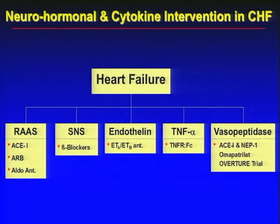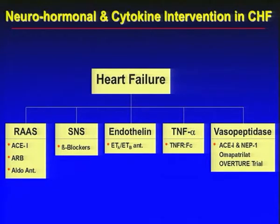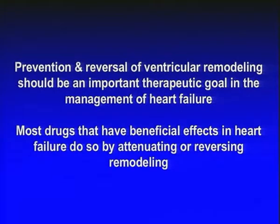It follows therefore that therapies were developed which would inhibit the adversely affecting neurohormones and promote those which had a beneficial effect. Thus came the evolution of ACE inhibitors, angiotensin receptor antagonists, aldosterone antagonists, and blockers of the sympathetic nervous system in terms of beta blockers. Theoretically we also felt that endothelin inhibitors, TNF-alpha inhibitors and vasopeptidase inhibitors should work. Prevention and reversal of ventricular remodeling should be an important therapeutic goal in management of heart failure.